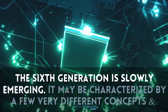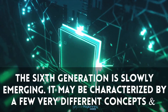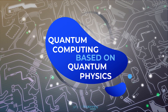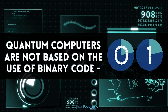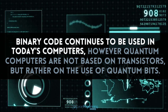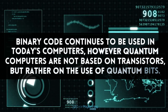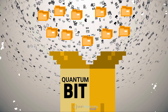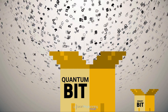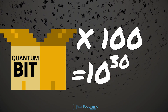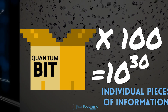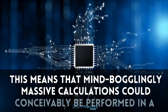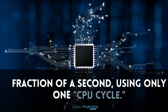The sixth generation is slowly emerging and may be characterized by a few very different concepts and technologies. For example, the use of gallium arsenide chips rather than silicon wafer chips, and the notion of quantum computing, which is based on quantum physics. Quantum computers are not based on binary codes of 0s and 1s, and not based on transistors, but rather on quantum bits. A quantum bit can have far more than two states and can store far more data than a binary bit. In fact, 100 quantum bits can theoretically contain 10 to the power of 30 individual pieces of information. The way quantum bits work makes parallel processing a necessity, meaning mind-bogglingly massive calculations could conceivably be performed in a fraction of a second using only one CPU cycle.